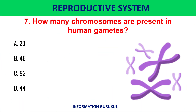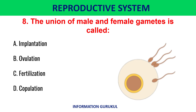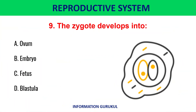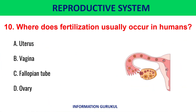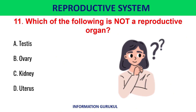How many chromosomes are present in human gametes? 23. The union of male and female gametes is called fertilization. The zygote develops into an embryo. Where does fertilization usually occur in humans? Fallopian tube. Which of the following is not a reproductive organ? Kidney.